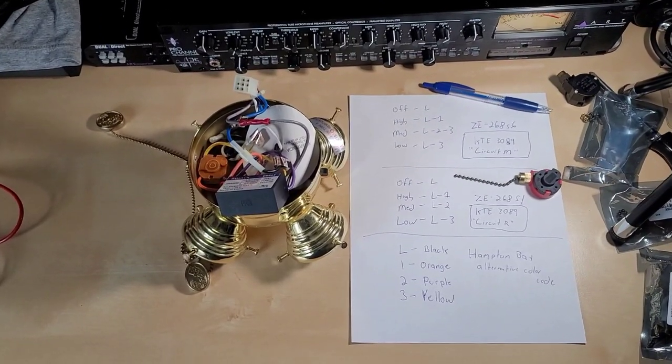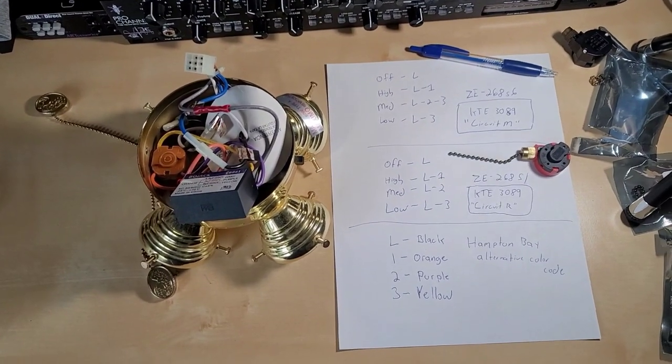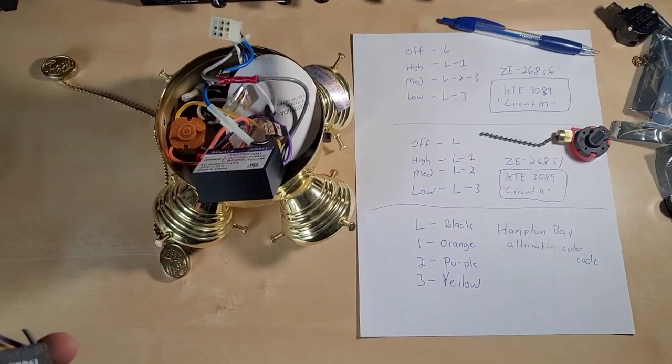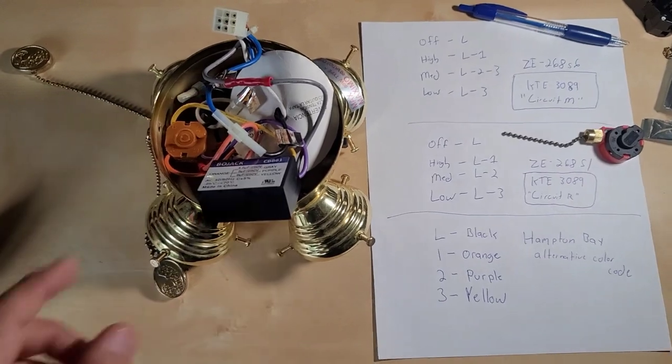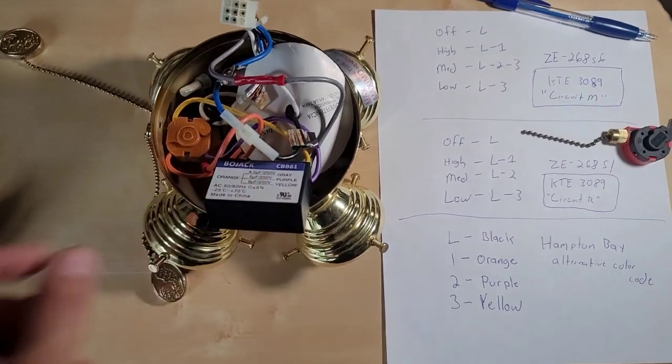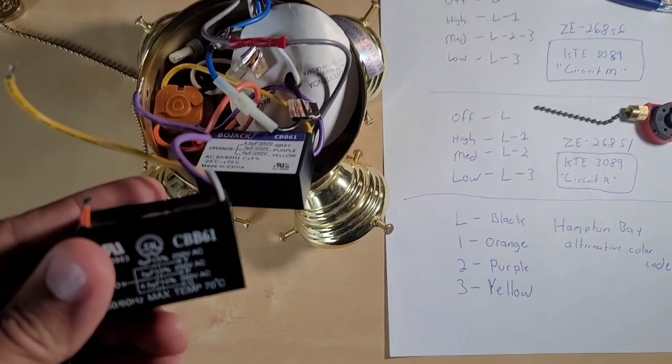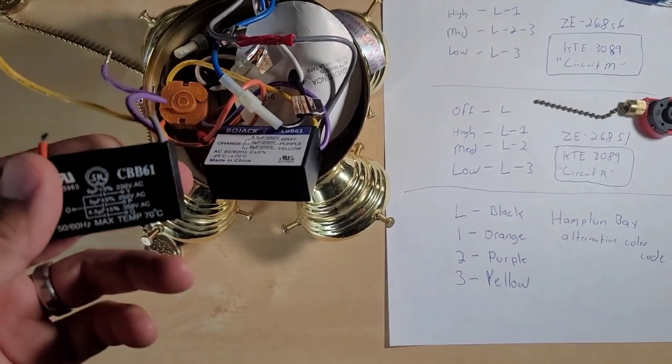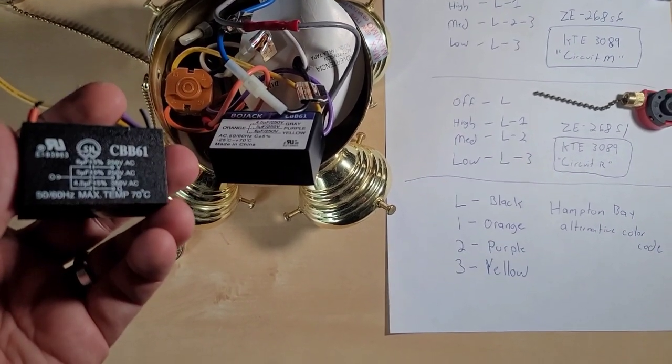So I hope you guys can see this okay. I don't have an overhead light at the moment for obvious reasons, but what is happening is that the capacitor in here was defective. This is the old capacitor and thankfully I was able to find a BoJack branded one.